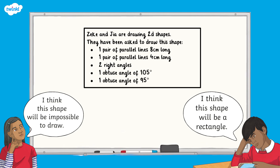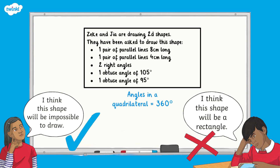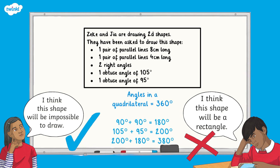Have you finished? Well done — here is your answer. Gia is correct; the shape will be impossible to draw. The shape being described is a quadrilateral, and the total of the internal angles in a quadrilateral is 360 degrees. When we add the angles listed: 90° + 90° = 180°, and 105° + 95° = 200°. 200° + 180° = 380 degrees — which exceeds 360 degrees. This means the shape will be impossible to draw.